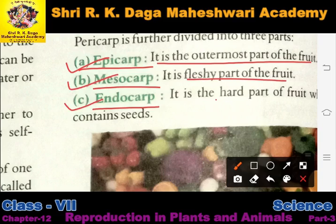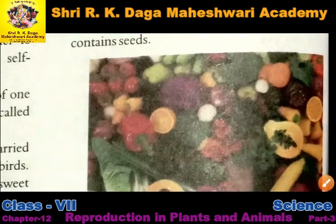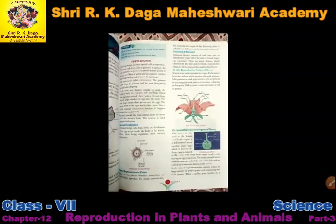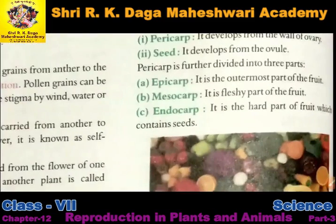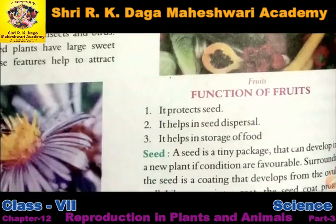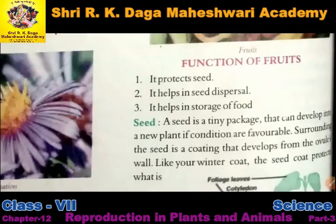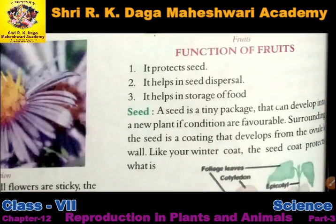Endocarp is the hard part of the fruit which contains the seeds. Ek mango ka example lekar samjhate hain — jo bahari hissa hai woh epicarp, jo beech wala rasila hissa hai that is the mesocarp, aur jo guthli wala hissa hai jisme seed hota hai use hum bolte hain endocarp.